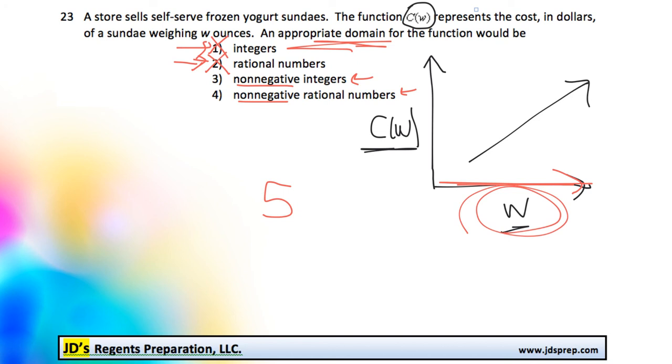Yeah, it could be like 5 ounces. It could be 10 or whatever. But it could also be rational because it could be 5.5 ounces, for example. It could be 5 and one-third. So there's no reason why it couldn't be a rational number. So number 4 would be the best answer for this question.